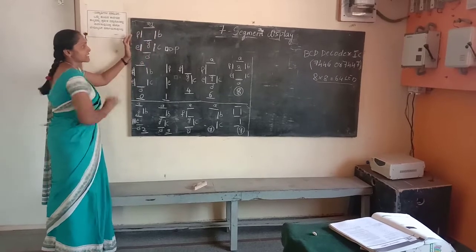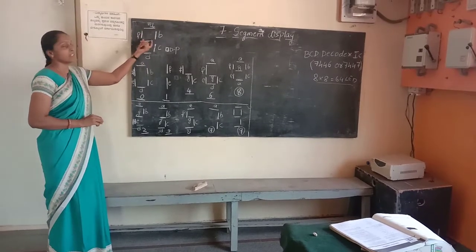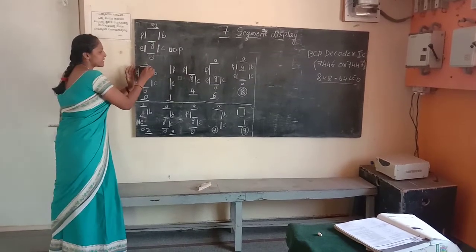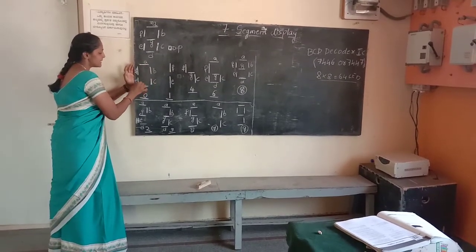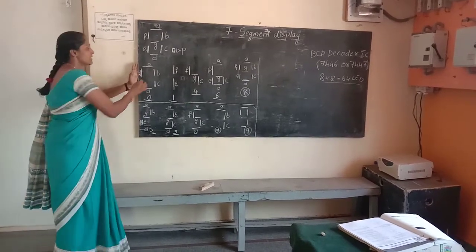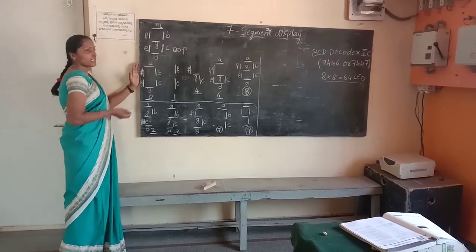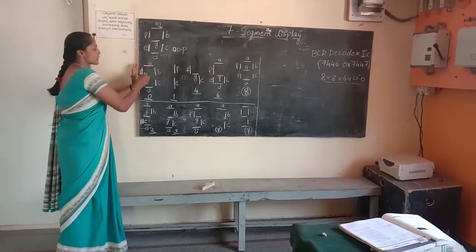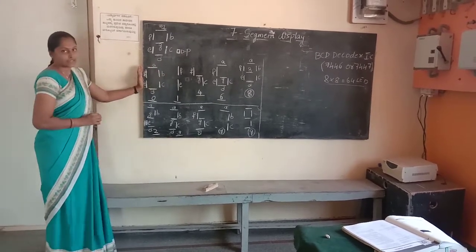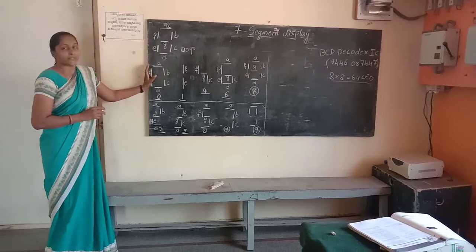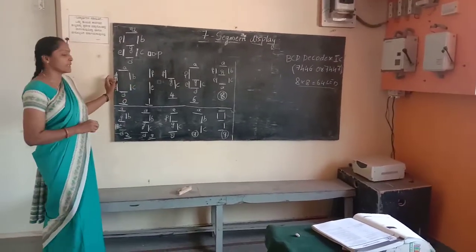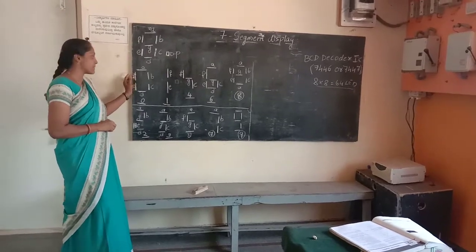This is G. This is 0 display. Segments are A, B, C, D, E, F. Decimal input 0 to 10, output 7-segment display. A through G segments will be activated, and G segment will be deactivated, so it will show 0 display.